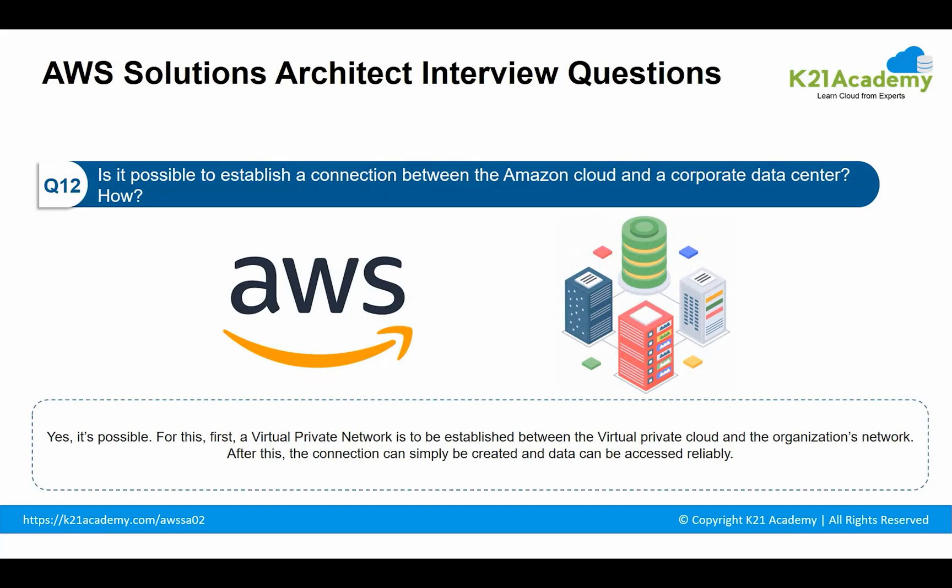The next question: is it possible to stabilize a connection between Amazon Cloud and corporate data centers? Yes, it is possible. For this, first a virtual private network is to be established between the Virtual Private Cloud and the organization's network. After this, the connection can simply be created and data can be accessed reliably.